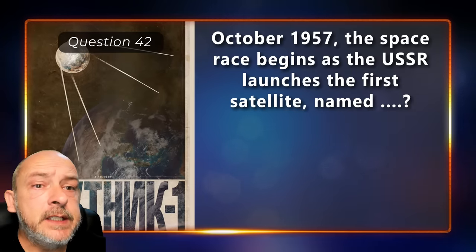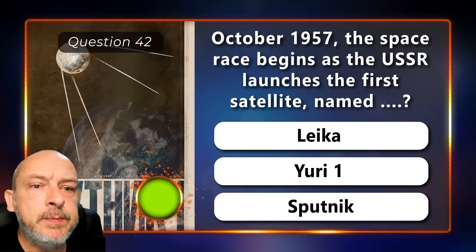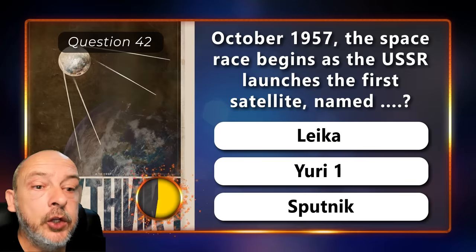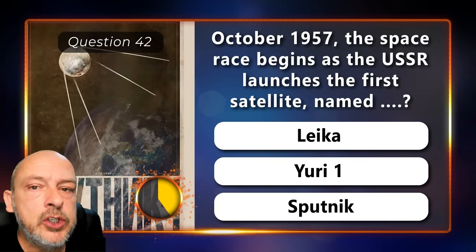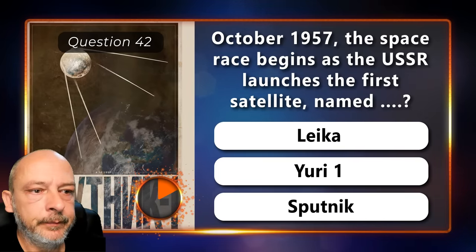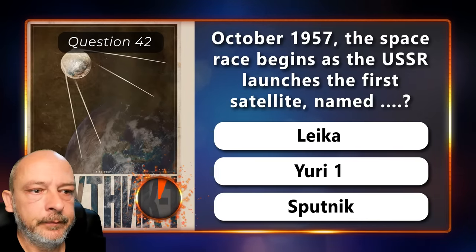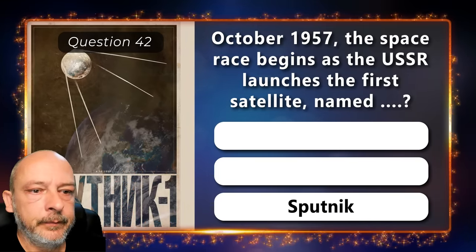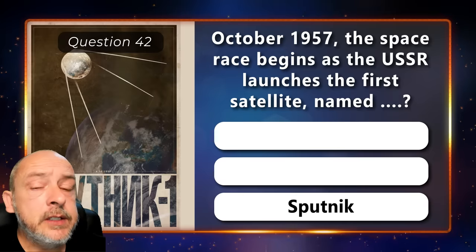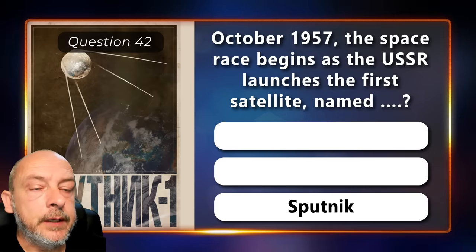October 1957: the space race begins as the USSR launches the first satellite. Was it named Laika, Yuri-1, or Sputnik? The correct answer is Sputnik.